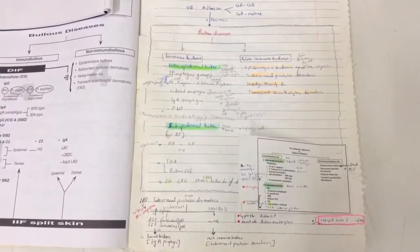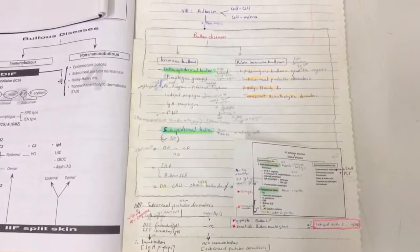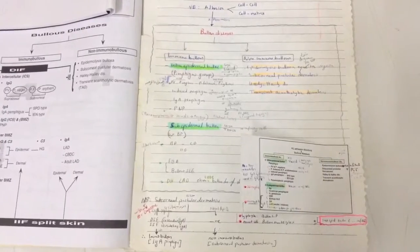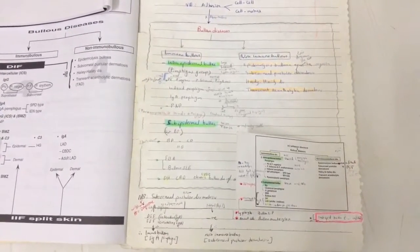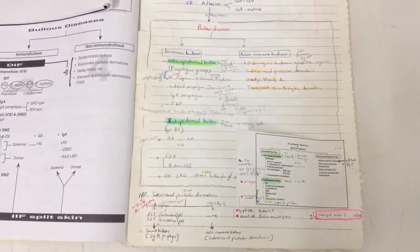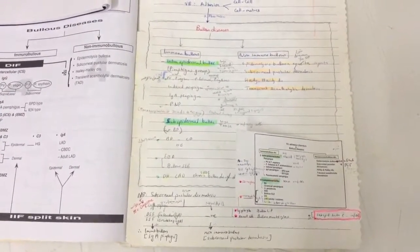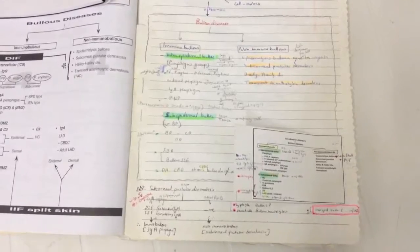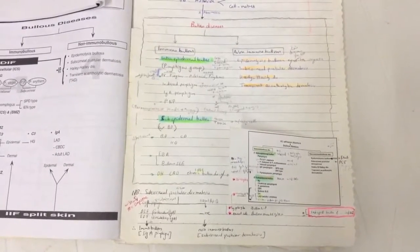Sub-epidermal bullae with no infiltrate include epidermolysis bullosa and porphyria cutanea tarda. So the classification of sub-epidermal bullae according to inflammatory cells covers: eosinophils, neutrophils, lymphocytes, mast cells, and without or with scanty infiltrate.